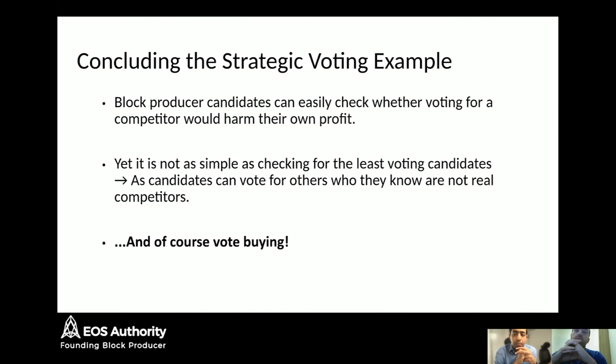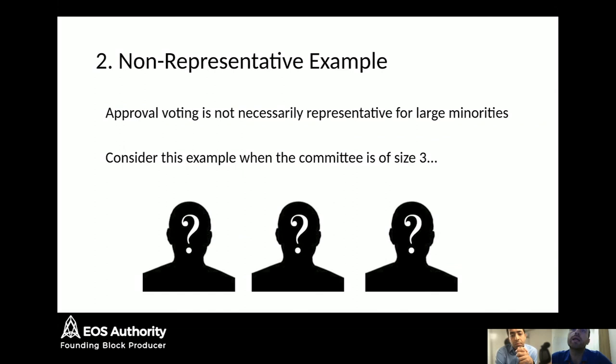This is even without mentioning vote-buying. Vote-buying is becoming more of a problem in EOS now. What can we do to stop it? We definitely have some ideas, and it relates to the second flaw that we've identified in standard approval voting.